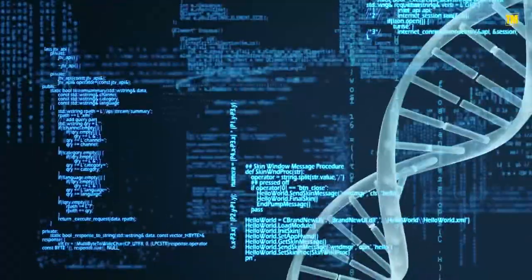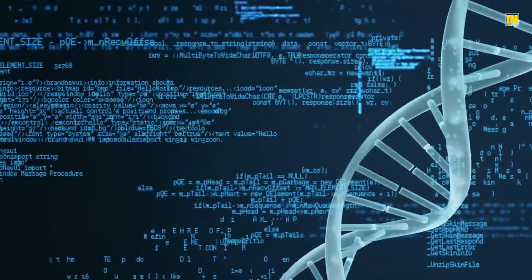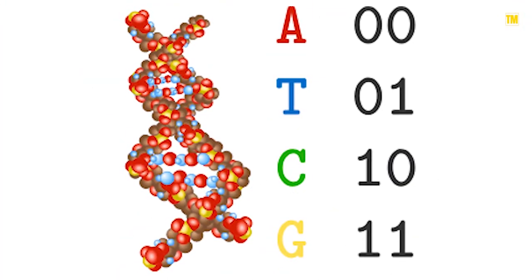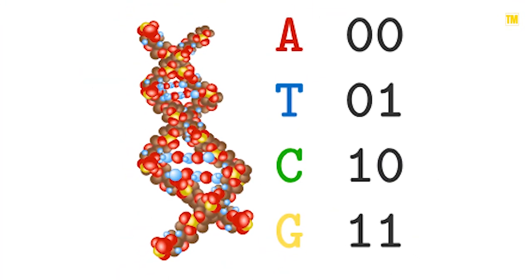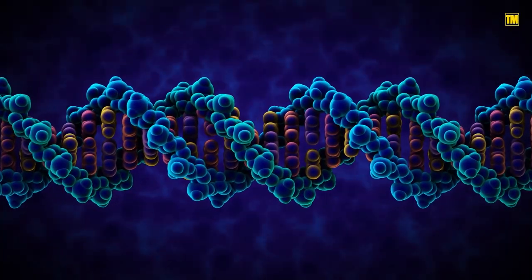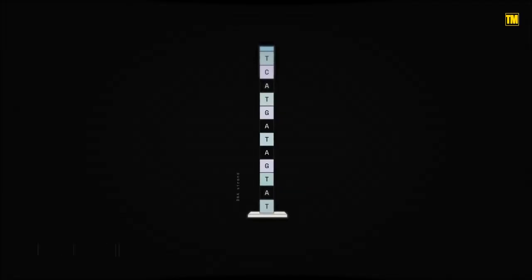It all begins with a binary code data file translated into the four base pairings, like A=00, T=01, C=10, and G=11. These DNA molecules are synthesized letter by letter with enzyme catalysts or chemical reactions and indexed.